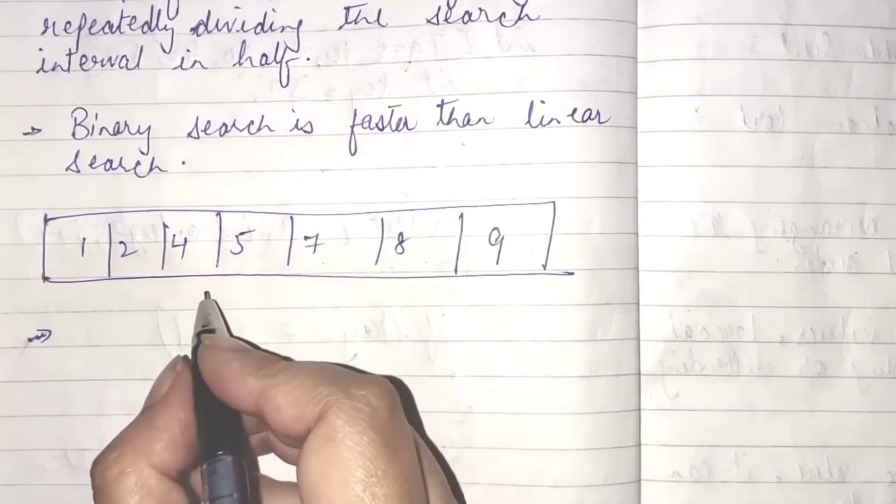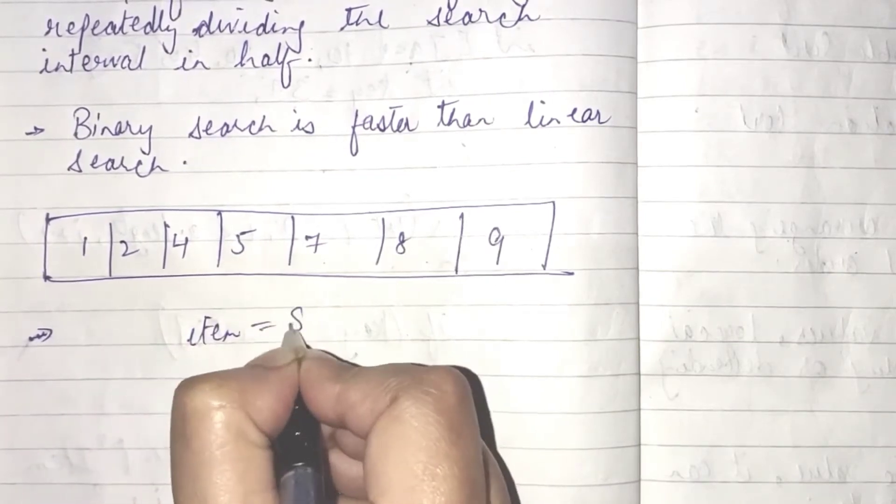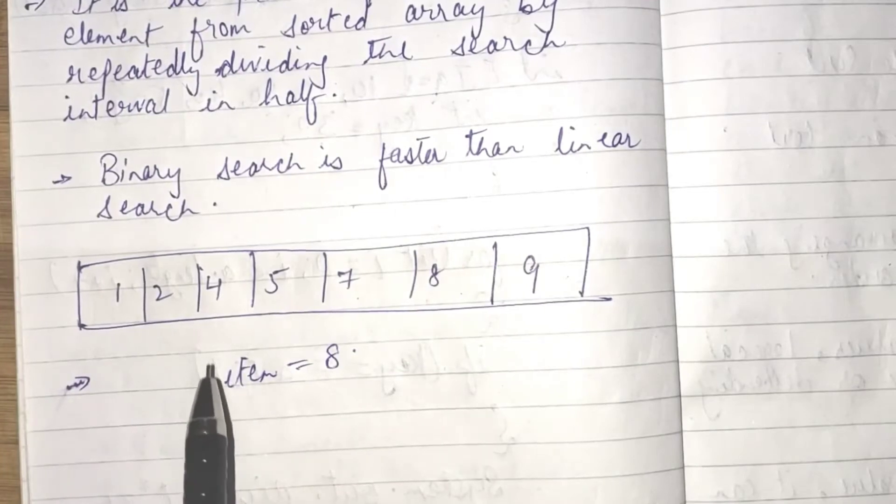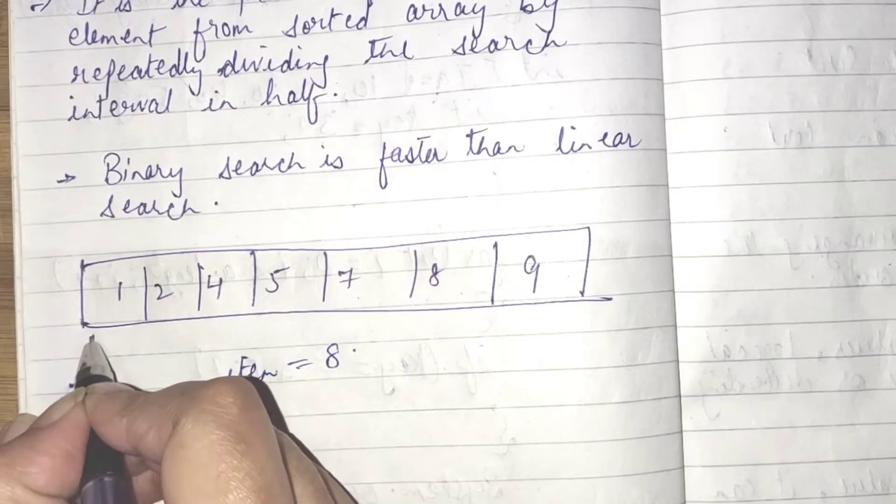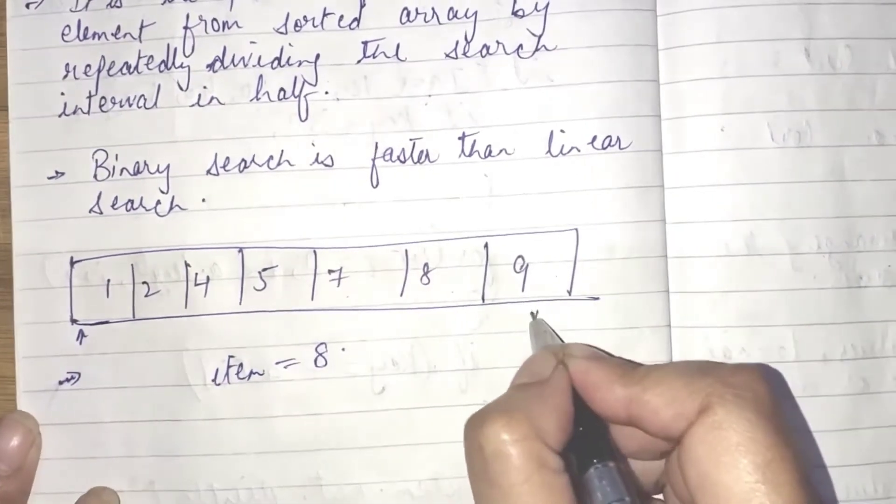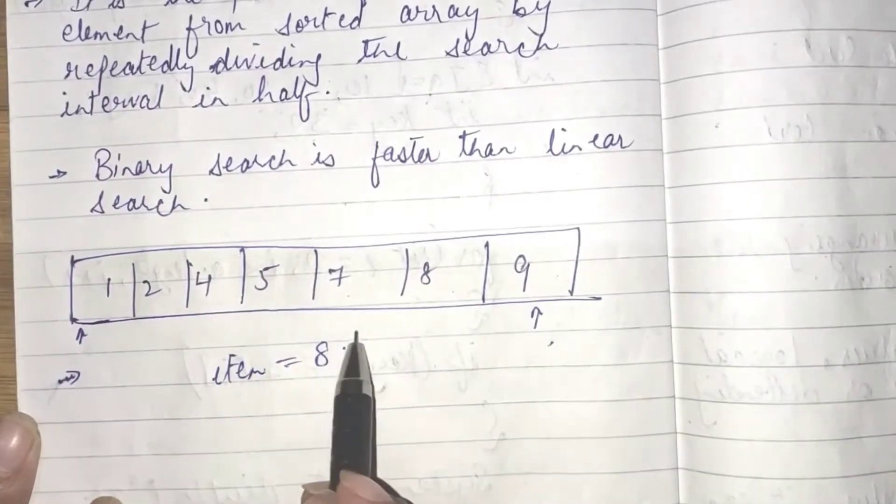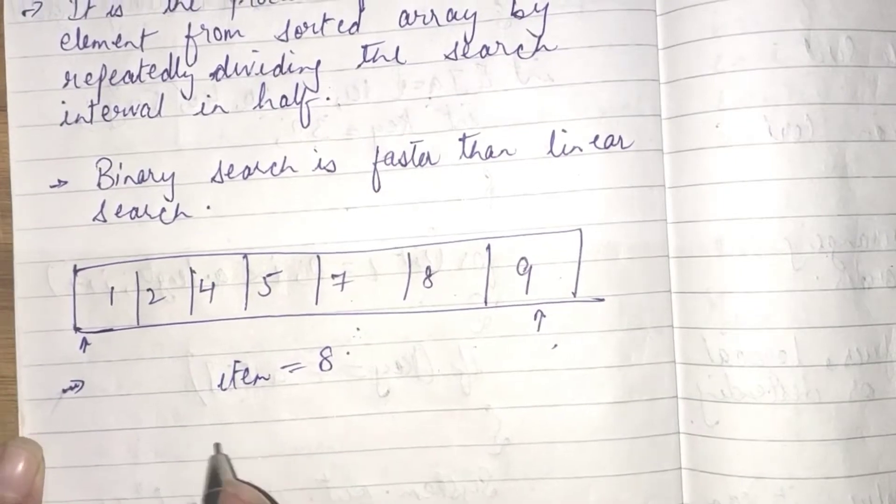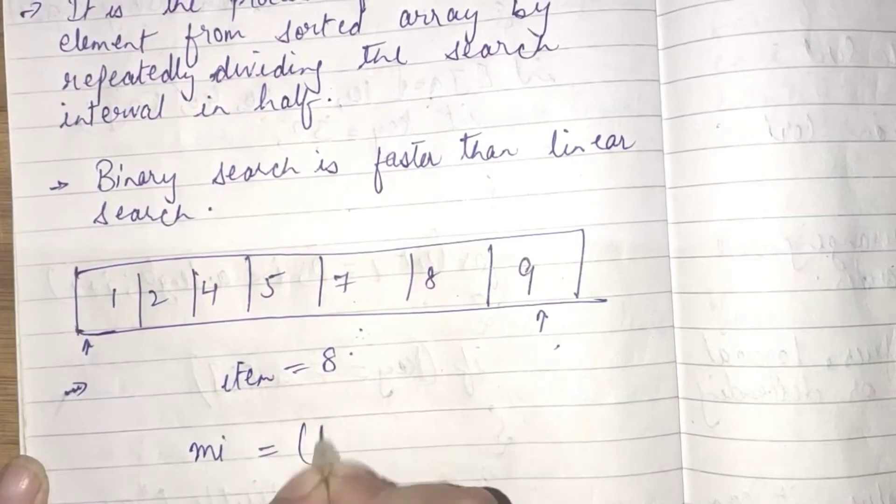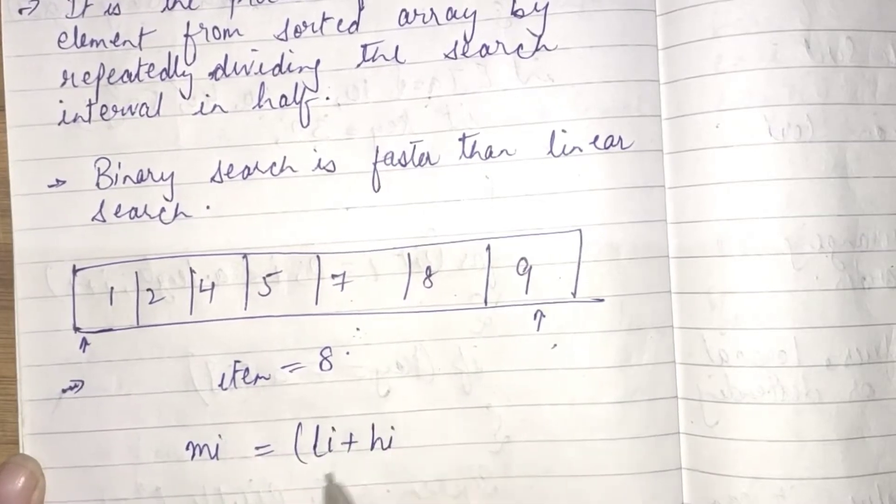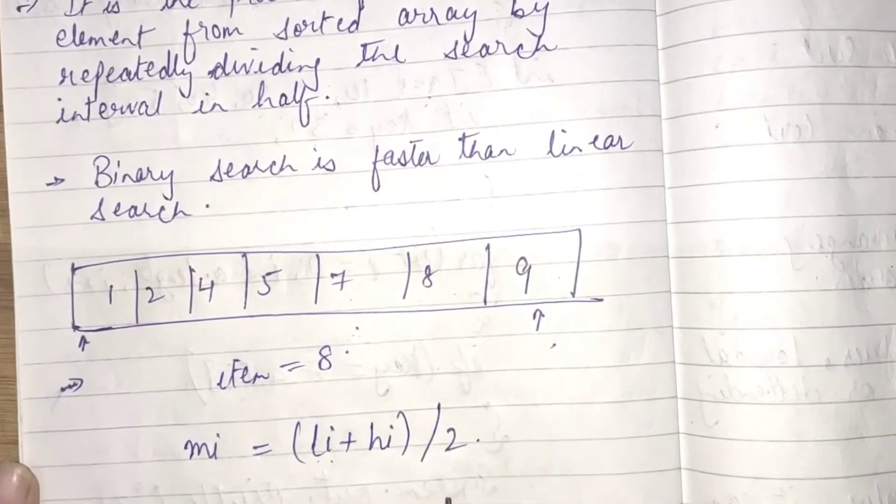So, if I want to search the item as 8, in that case, what will be done? We are going to first of all find the lowest value, lowest item. This is 1 is your lowest item, 9 is your highest item and we have to find the middle item of it. For finding the middle item, the formula is MI equal to LI plus HI. LI is your lowest item and HI is your highest item divided by 2.